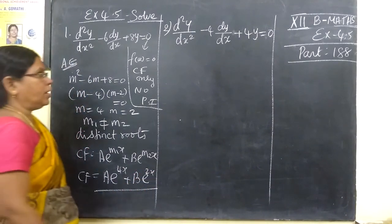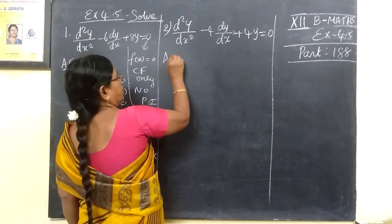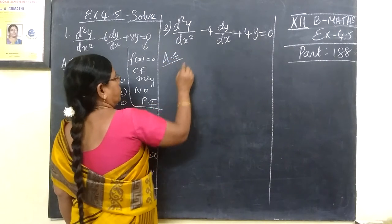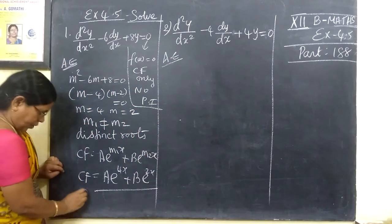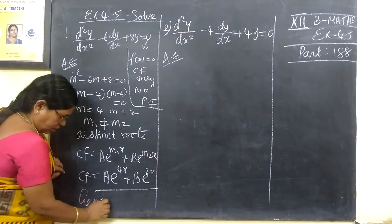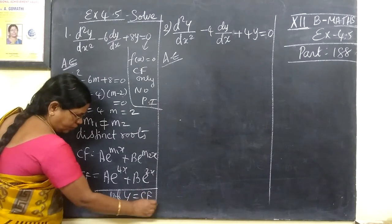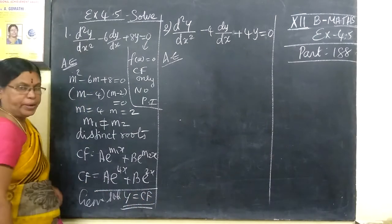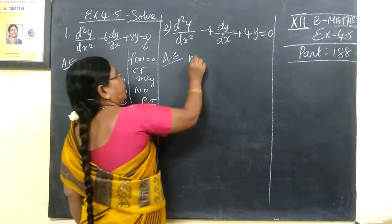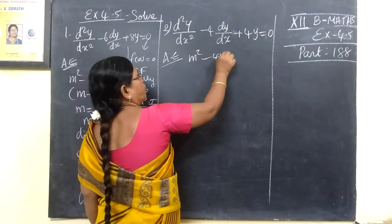So this is the complementary function. e power m2x is part of the solution when roots are distinct.